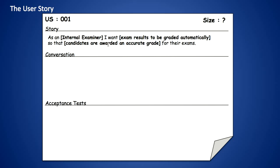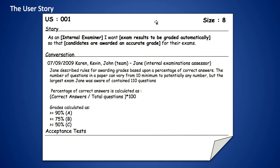These are the three really important pieces of information: who is delivering value to, what that value or functionality is, and the reason for that functionality. It's important to remember that a user story is just a placeholder for a conversation that needs to happen between us and our customer. We begin that conversation with the team, who have spoken to Jane, the internal examinations assessor. Jane described the rules for awarding grades based upon a percentage of correct answers.